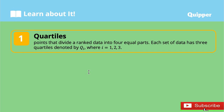Let's define first what quartiles are. Quartiles are points that divide ranked data into four equal parts. Each set of data has three quartiles, denoted by Q sub i, where i is equal to 1, 2, and 3.